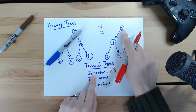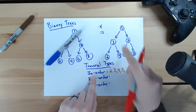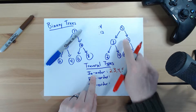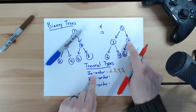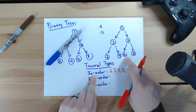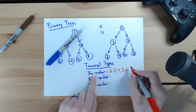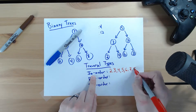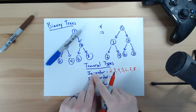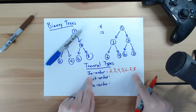Then we go back to the 5. The 5 says: I just finished printing my left, now I'm going to print myself — 5 — and then I need to print my right. To print the 7 node, it prints its left which is 6, then itself — 7 — and then finally what's on the right, 8. In-order traversal — and this is why it's called in-order — is because it ends up traversing through these elements in their sorted order.